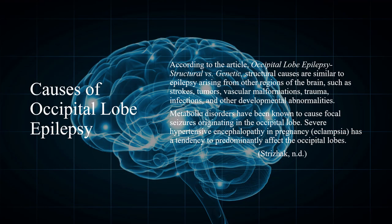According to the article Occipital Lobe Epilepsy: Structural vs. Genetic, structural causes are similar to epilepsy arising from other regions of the brain, such as strokes, tumors, vascular malformations, trauma, infections, and other developmental abnormalities. Metabolic disorders have been known to cause focal seizures originating in the occipital lobe.